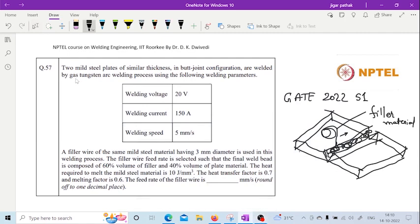The first question is: two mild steel plates of similar thickness in butt joint configuration are welded by gas tungsten arc welding process using the following welding parameters. The welding voltage is given as 20 volts, welding current is 150 amperes, and the welding speed is 5 mm/s.